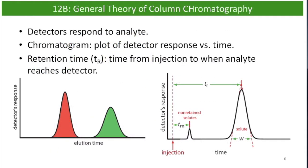Now for some general theory of column chromatography. Just like in any kind of analysis, the detector responds to the analyte. In spectrophotometry — like in the iron vitamin lab or the copper EDTA lab — you use a spectrophotometer that responds to different color analytes, so the spectrophotometer is the detector. In chromatography, the detector can be a number of different things, which you'll learn about in more advanced courses in analytical chemistry.